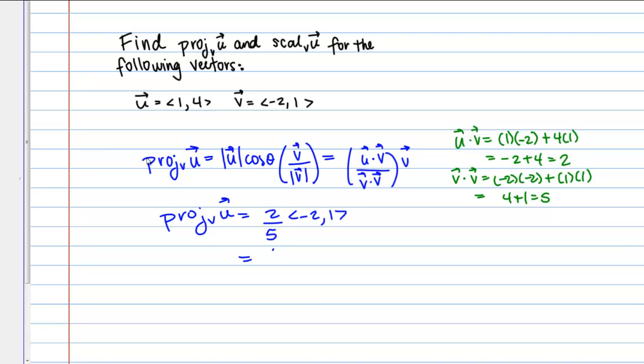You could also write it like this. This 2 fifths is a scalar, so I can multiply it by the components of the vector, and I could write it as negative 4 fifths comma 2 fifths. The projection of vector U onto V is this vector here, component of negative 4 fifths in the X direction and component of 2 fifths in the Y direction.